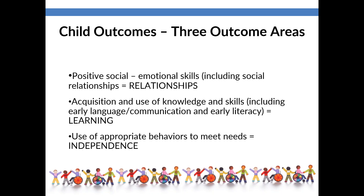The child outcomes focus on three areas of child functioning necessary for each child to be an active and successful participant at home, in early care and education settings, and in the community. The three outcome areas are: positive social emotional skills — sometimes shortened to relationships; acquisition and use of knowledge and skills — shortened to learning; and use of appropriate behaviors to meet needs — shortened to independence. In upcoming slides we'll go into more detail regarding skills associated with each of these outcome areas.